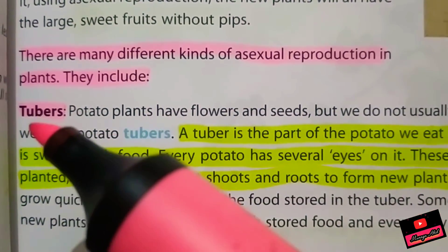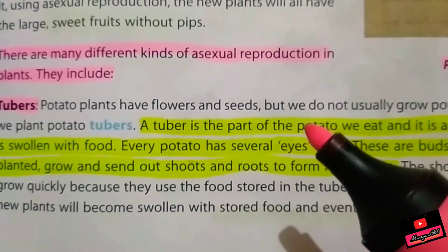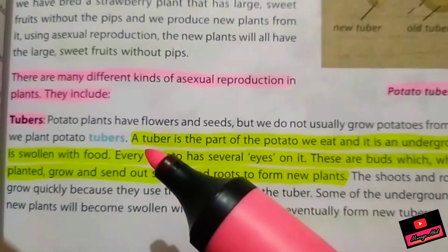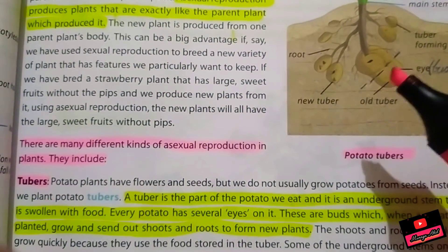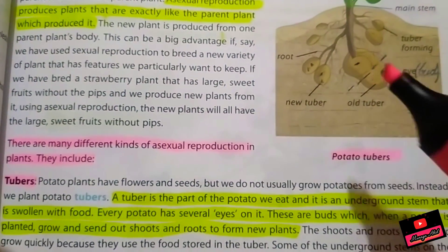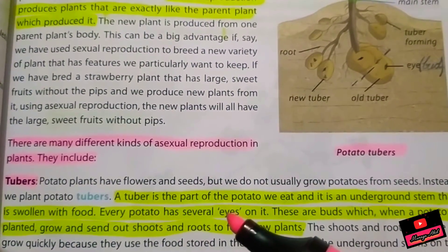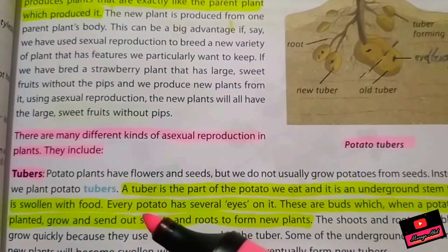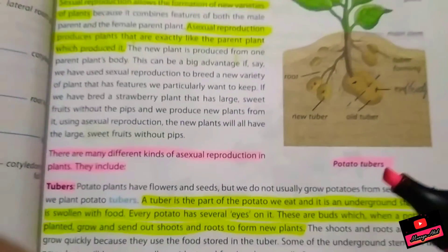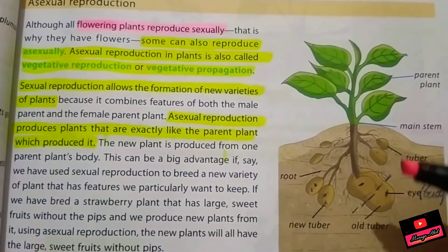The number one type of asexual reproduction is tubers. Potato — you eat finger chips, potato chips, or snacks — they all come from the potato tuber. A tuber is a part of a plant; it is an underground stem that is swollen because it has food stored in it, and it has several eyes. These eyes act like buds and they grow, sending out shoots and roots to form new plants under suitable conditions.